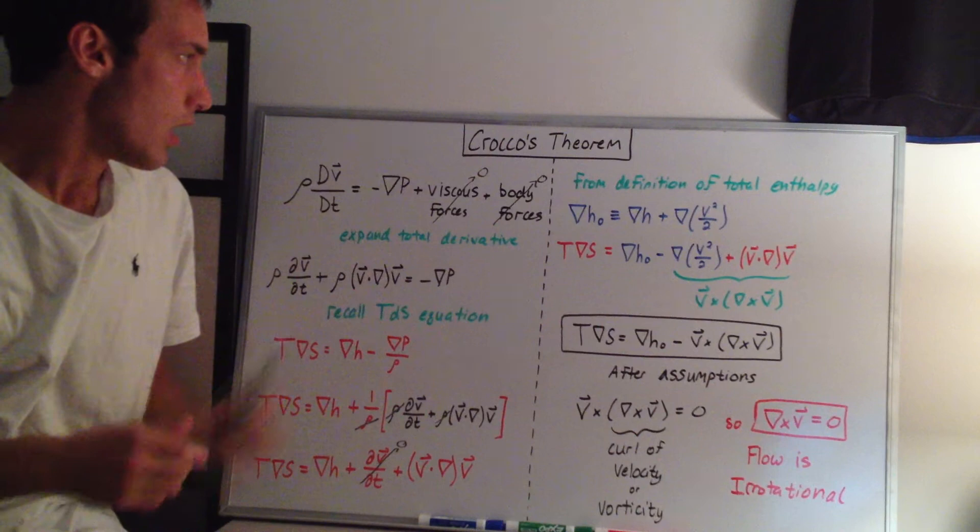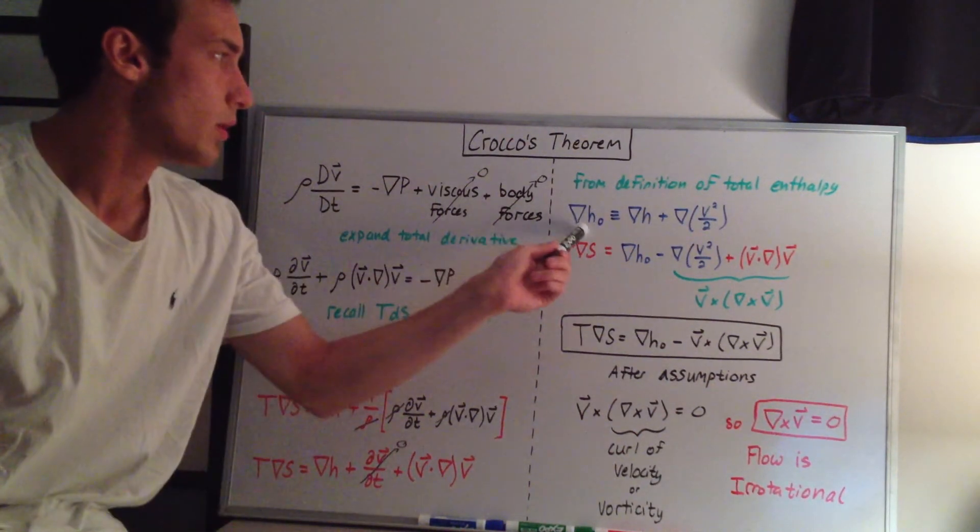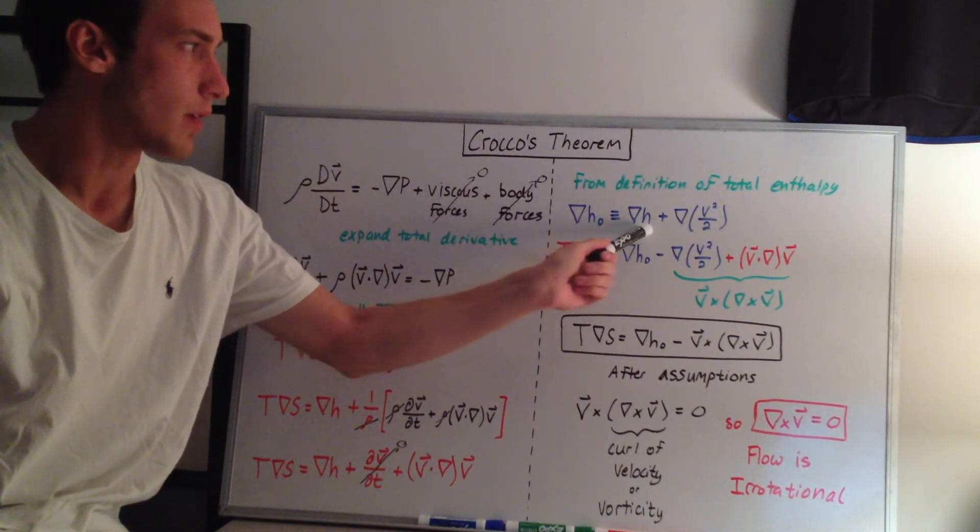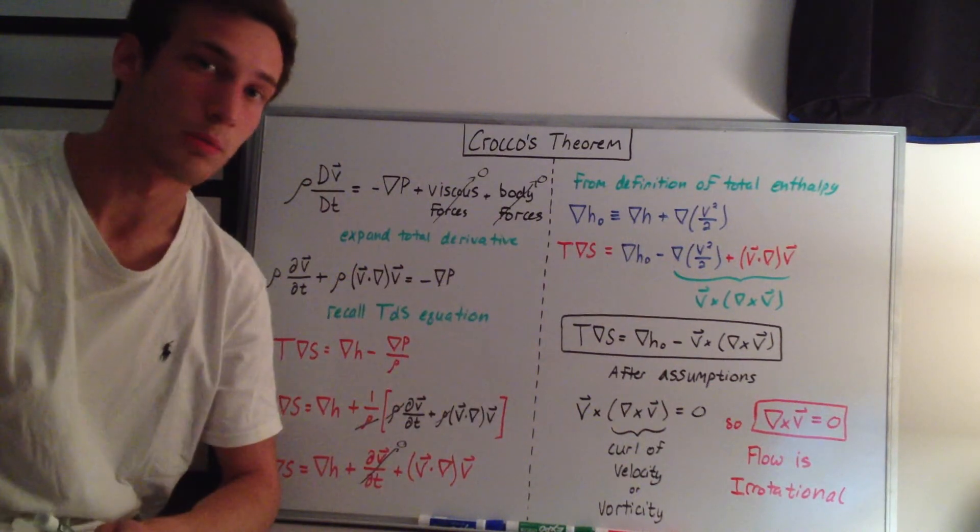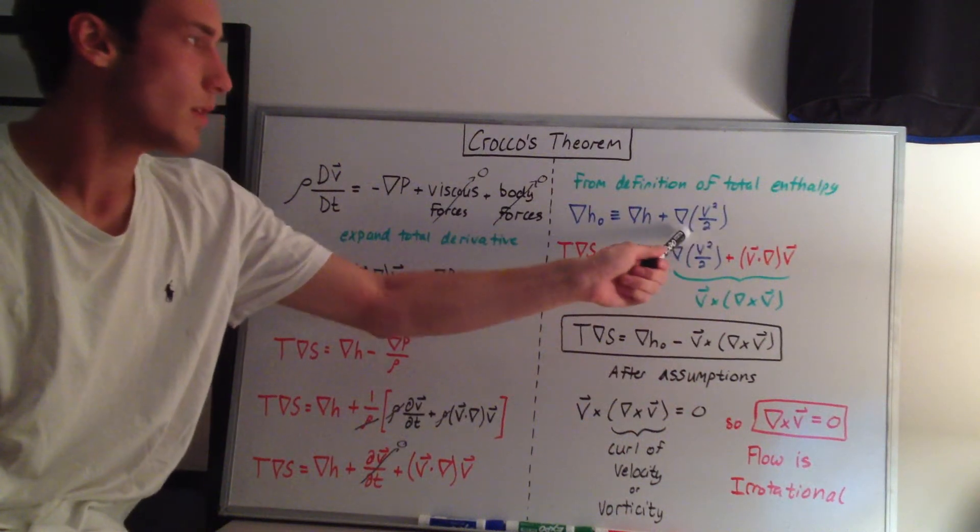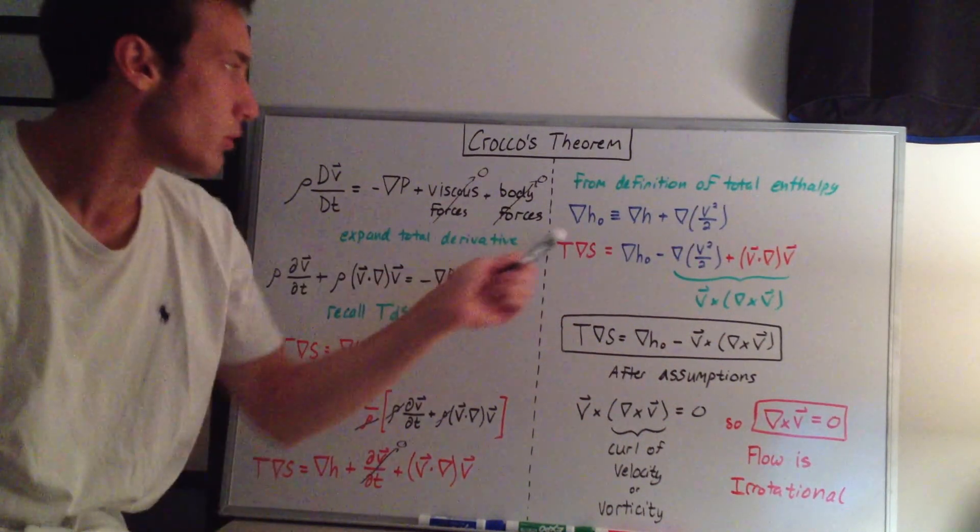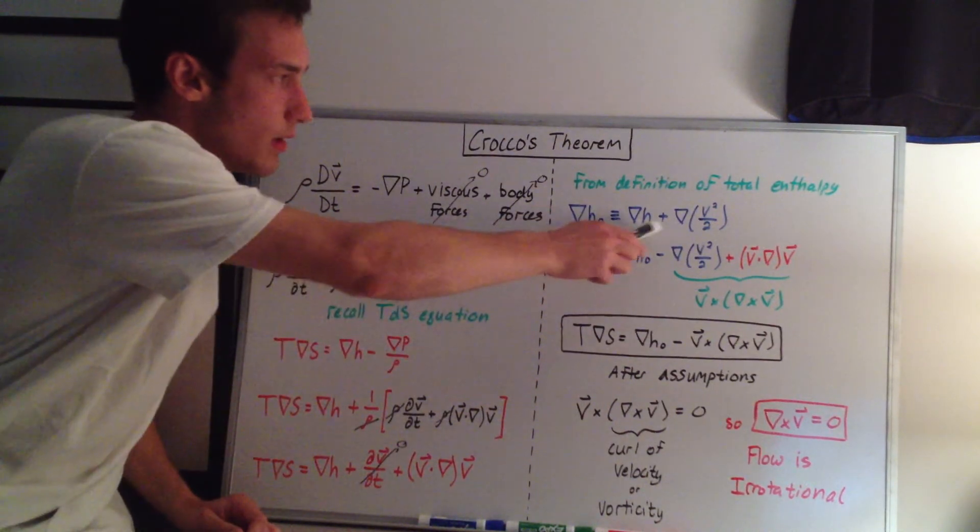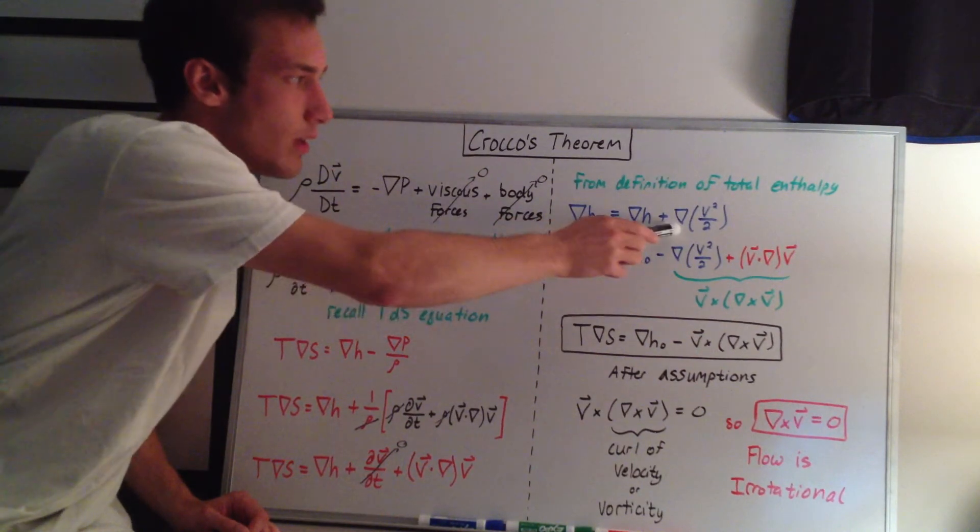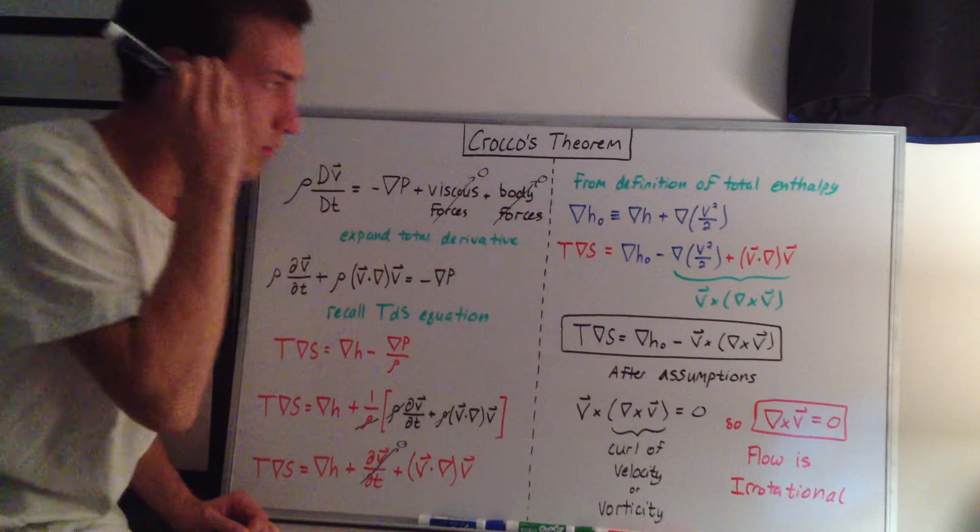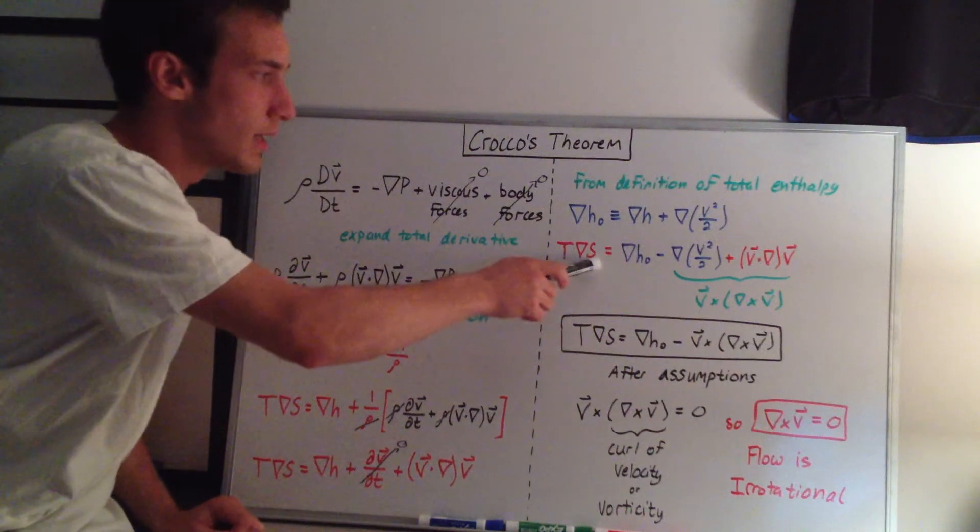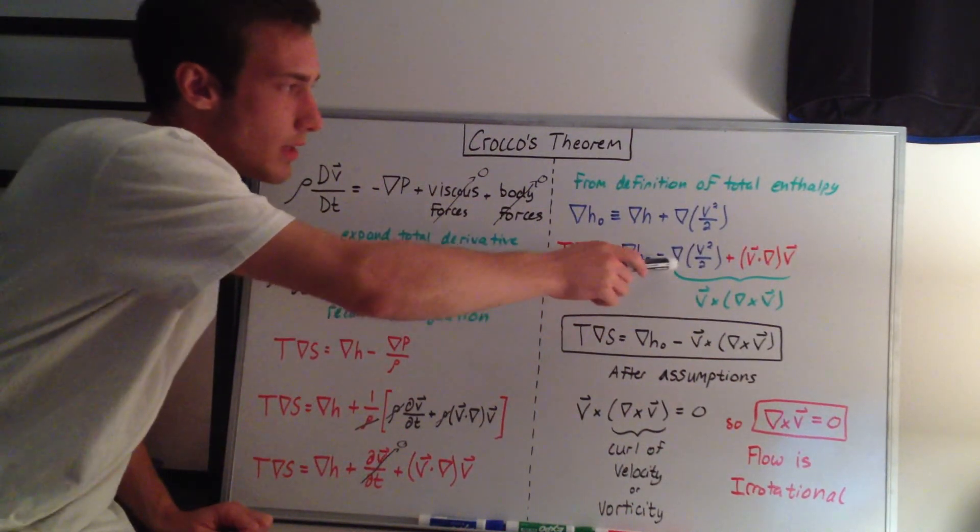From the definition of the total enthalpy, the gradient of the total enthalpy dh0 is equivalent to the static enthalpy plus a kinetic enthalpy. This is the enthalpy in the static flow when it's not moving, and this is the enthalpy due to the movement of the flow. If we move this term over, we have dh equal to dh0 minus d(v squared over 2). Then we can plug that into the TDS equation. We still have TdS equal to dh0 minus d(v squared over 2).